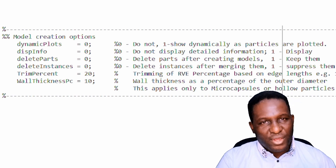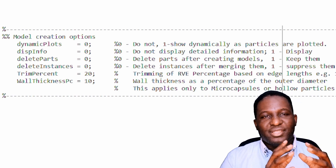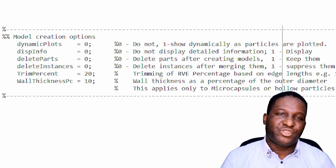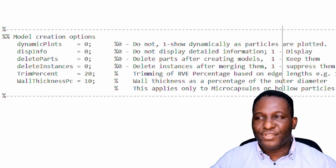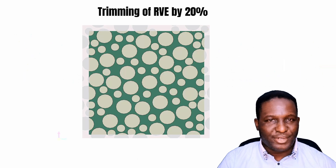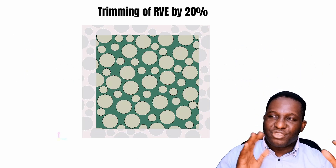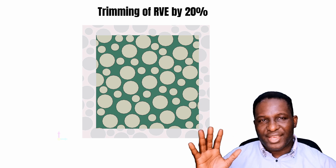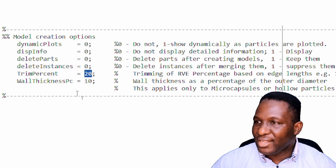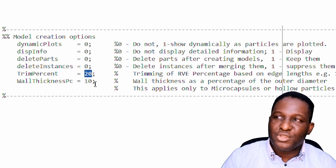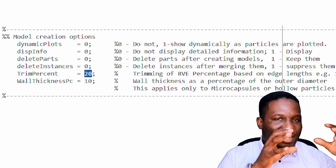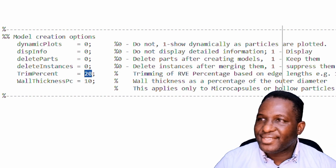I specify a little bit of the material properties: the Young's modulus for the particle is 400 GPa, its Poisson ratio, the Young's modulus of the matrix and its Poisson ratio. One thing I want to do is trim the RVE to show the internal structure — some particles are on the edges of the domain — so I'm going to trim off about 20% of my original 10 × 10 × 10 micron dimensions to reveal what is going on internally within the system.